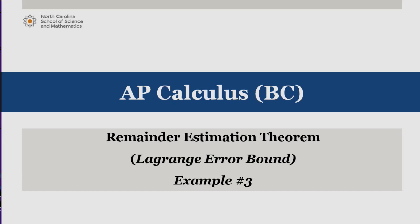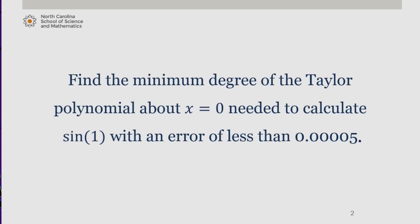In this video, we're going to apply the remainder estimation theorem to find the minimum degree of the Taylor polynomial about x equals 0 needed to calculate sine of 1 with an error of less than 0.00005.